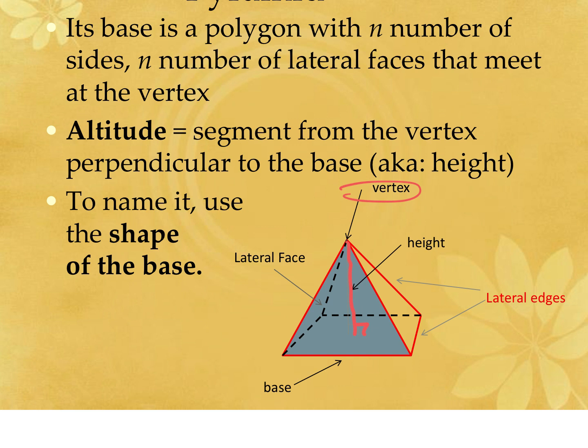We'll be bringing back a lot of chapter 9 knowledge — Pythagorean theorem and special right triangles. To name a pyramid, just like a prism, you name it using the shape of the base. In this particular picture I don't see any congruency marks, so I can't tell if this is a square base, and I would just name this a rectangular pyramid.